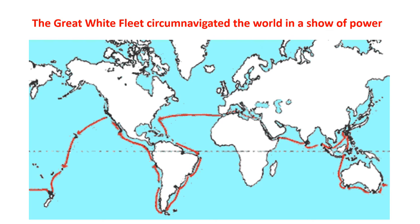When T.R. visited the construction site, he became the first United States sitting president to leave the country — here's a picture of him with some construction equipment, Roosevelt in white. The Panama Canal finally opened during World War I and just transformed navigation. Teddy Roosevelt also wanted the United States to have a stronger influence in the Caribbean, in Central America, South America, and the Western Hemisphere.